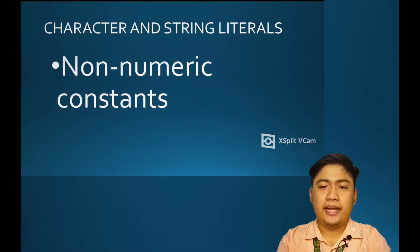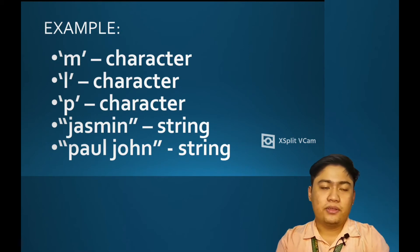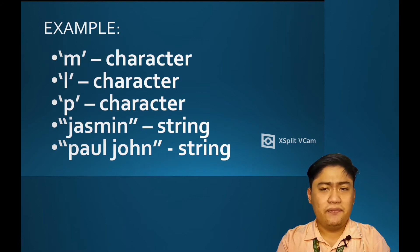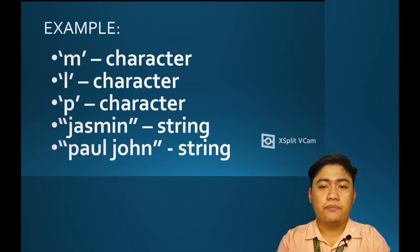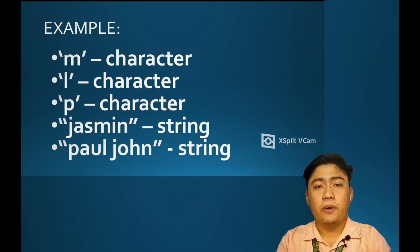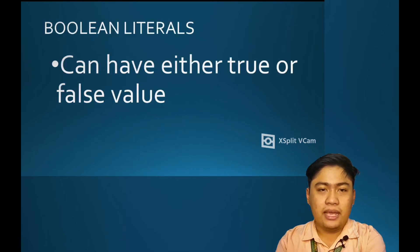Character and string literals are non-numeric constants. The difference between a character and a string literal is that a character represents a single character constant, while a string literal is composed of several characters. Also, a character is enclosed with single quotation marks while a string has double quotation marks, as you can observe from the examples.